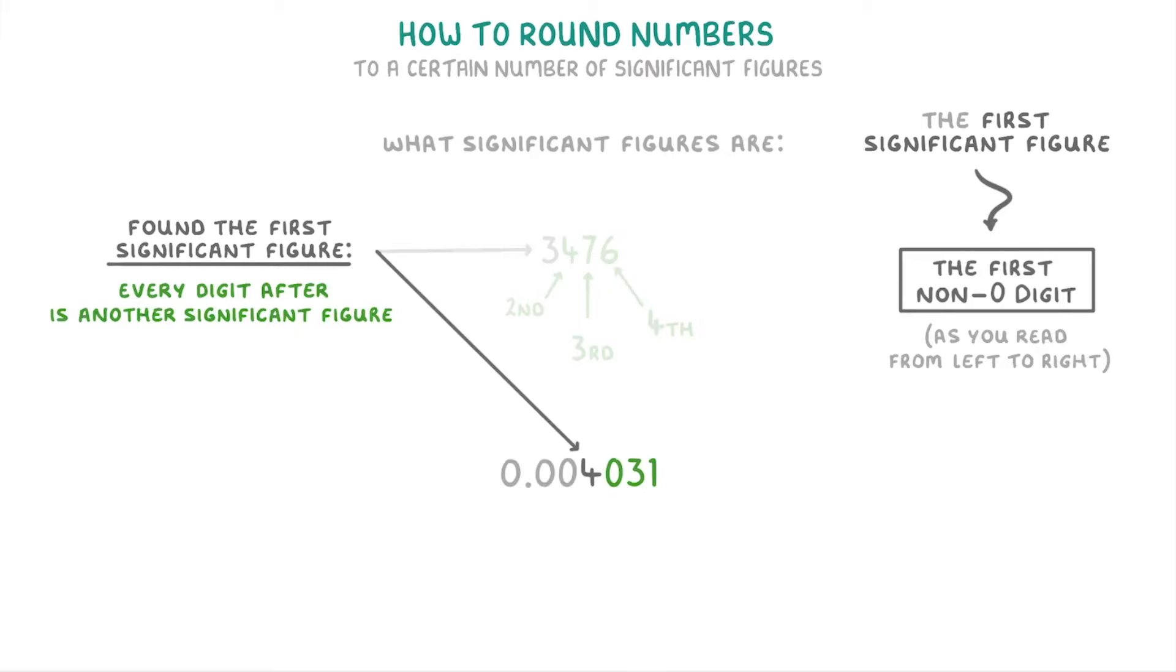Meanwhile for 0.004031, this zero would be the second significant figure, the three would be the third, and the one would be the fourth. And notice that this time the zero does count as a significant figure because it's to the right of the first significant figure.